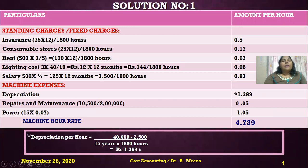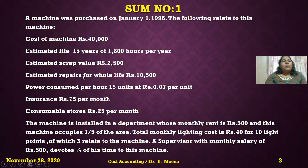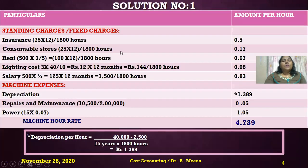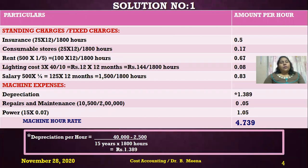The next information from the problem is repairs for the whole life of the machine: 10,500 rupees. The machine can run for 2 lakh hours over its whole life, so under machine expenses, repairs and maintenance is 10,500 divided by 2,00,000 hours, giving 0.05 rupees per hour.